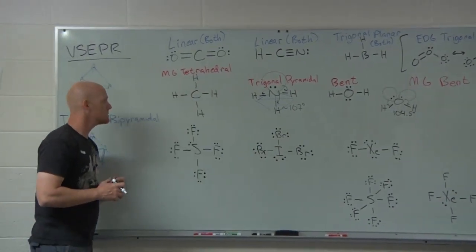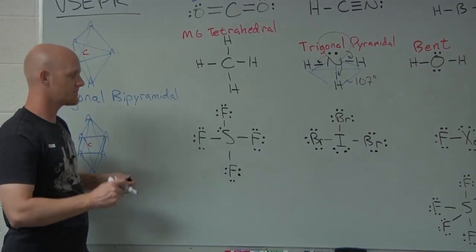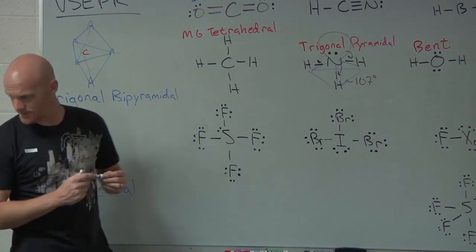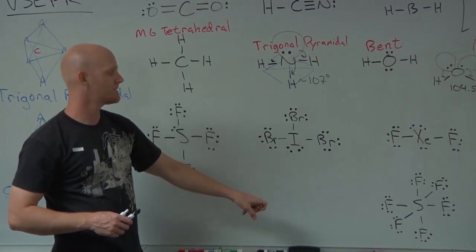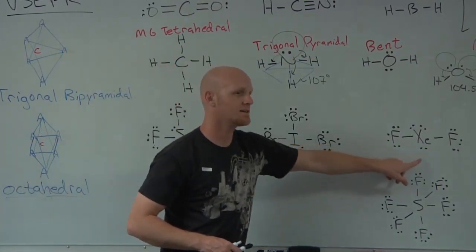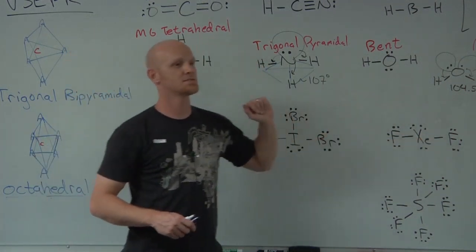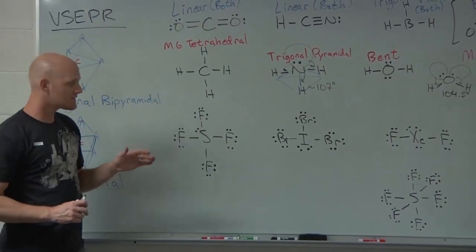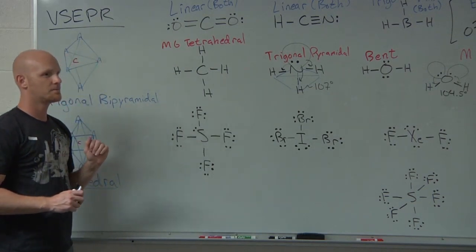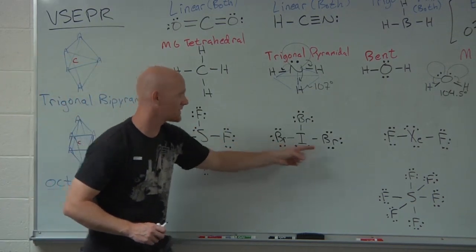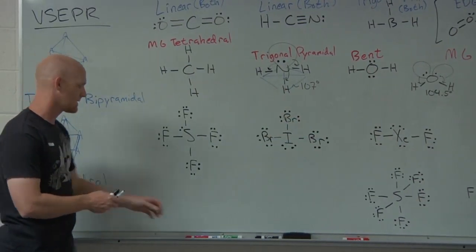For molecules with five electron domains, the electron domain geometry is trigonal bipyramidal. Multiple examples shown each have five total electron domains including non-bonding electrons, so all have a trigonal bipyramidal electron domain geometry. However, because none of them have all bonding domains, none of them will have a molecular geometry also called trigonal bipyramidal.